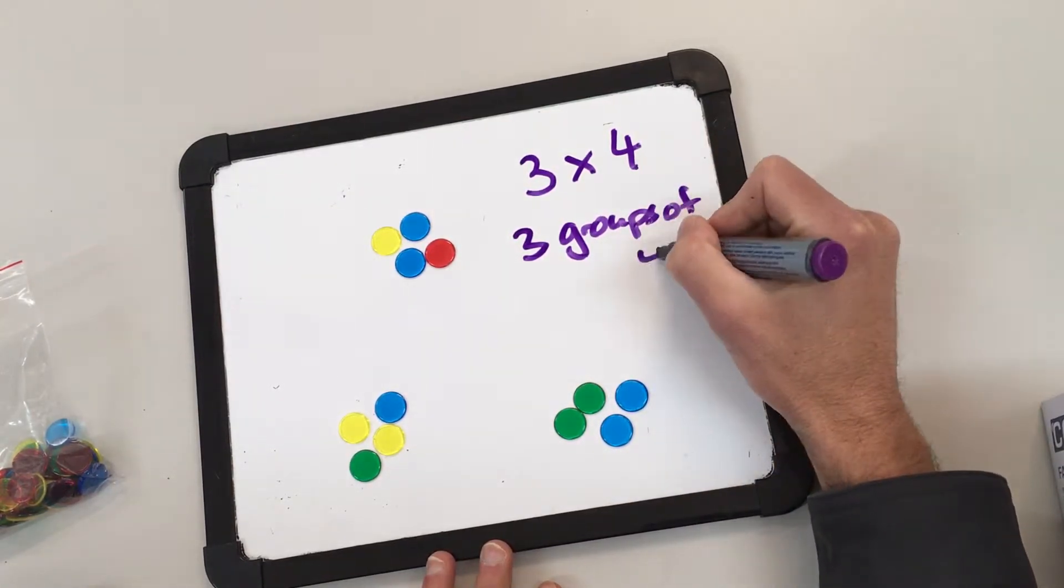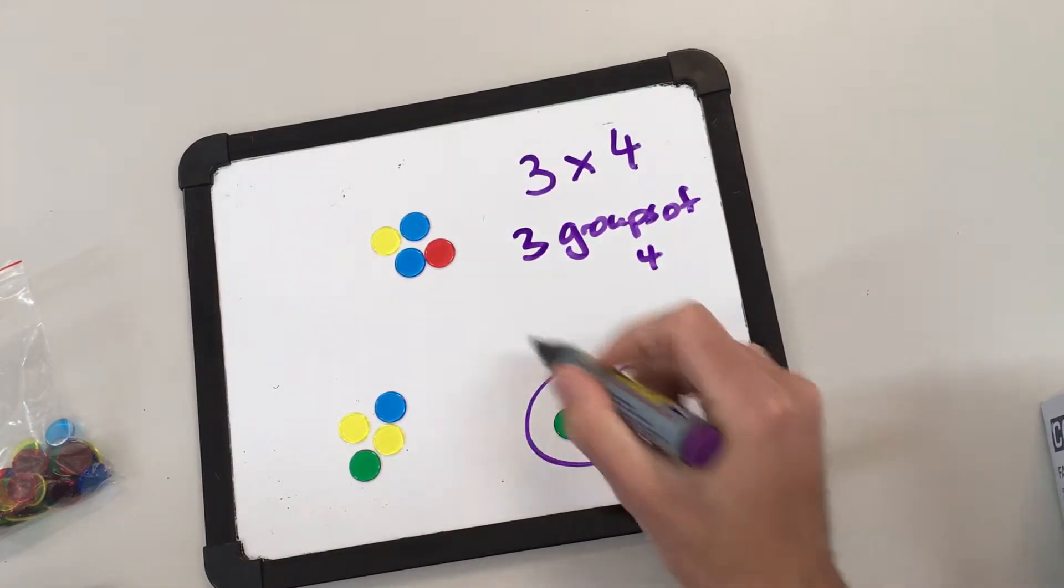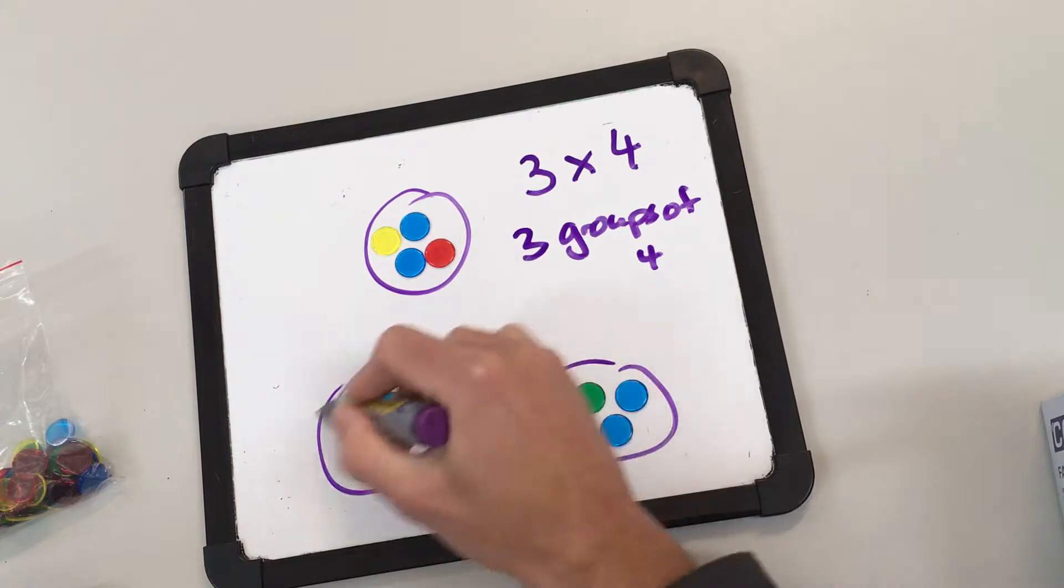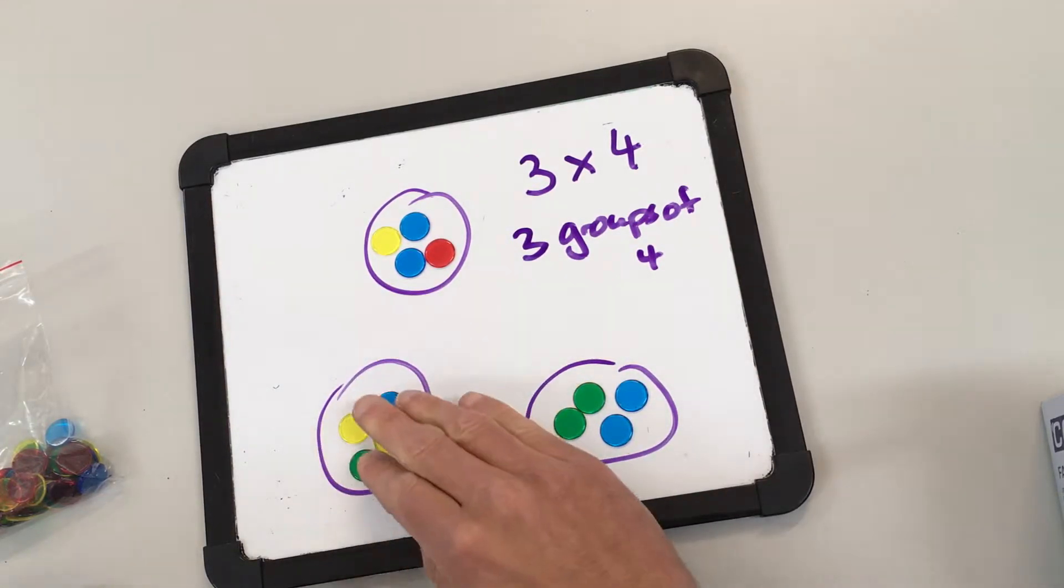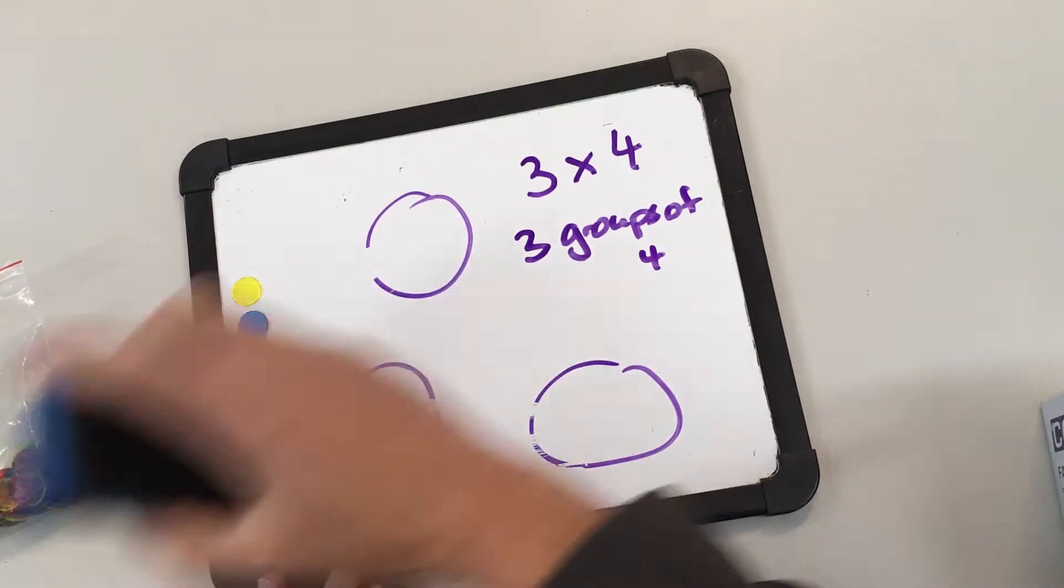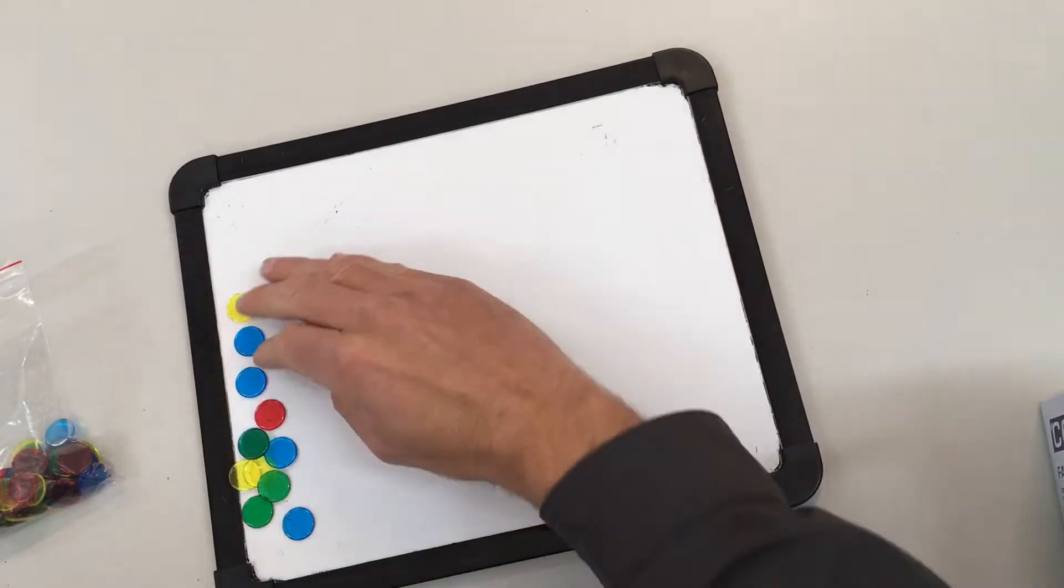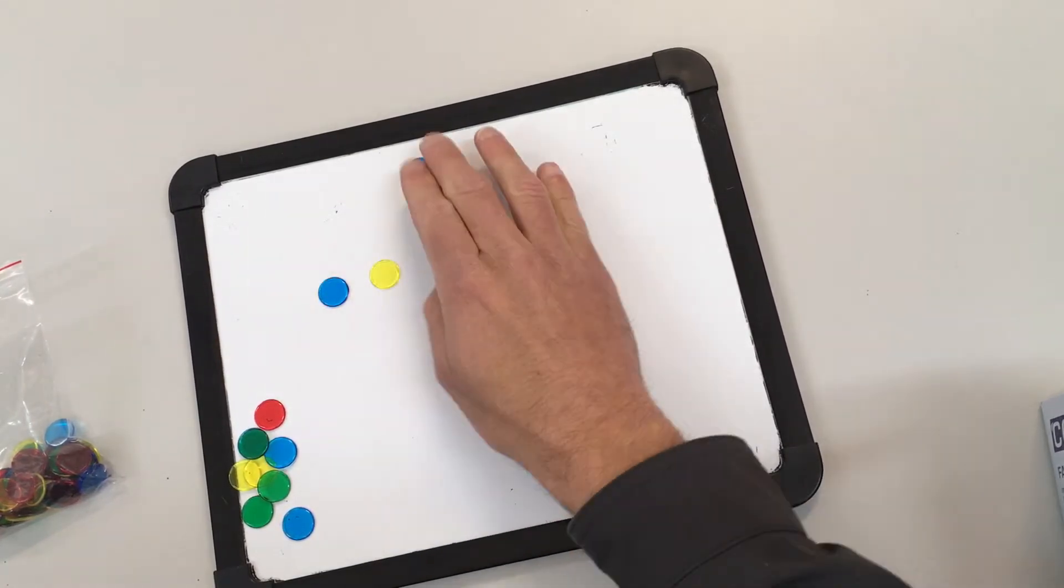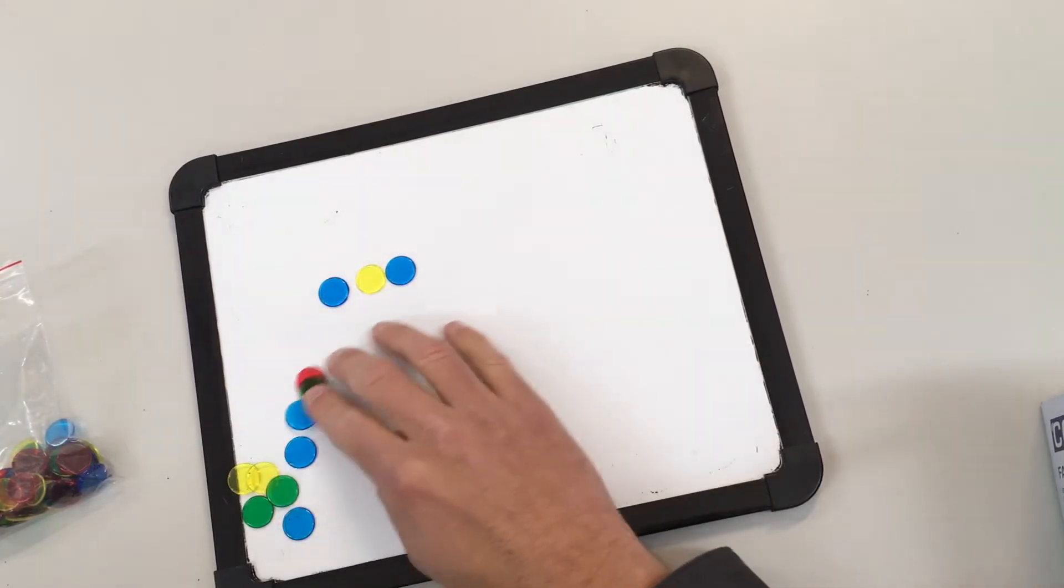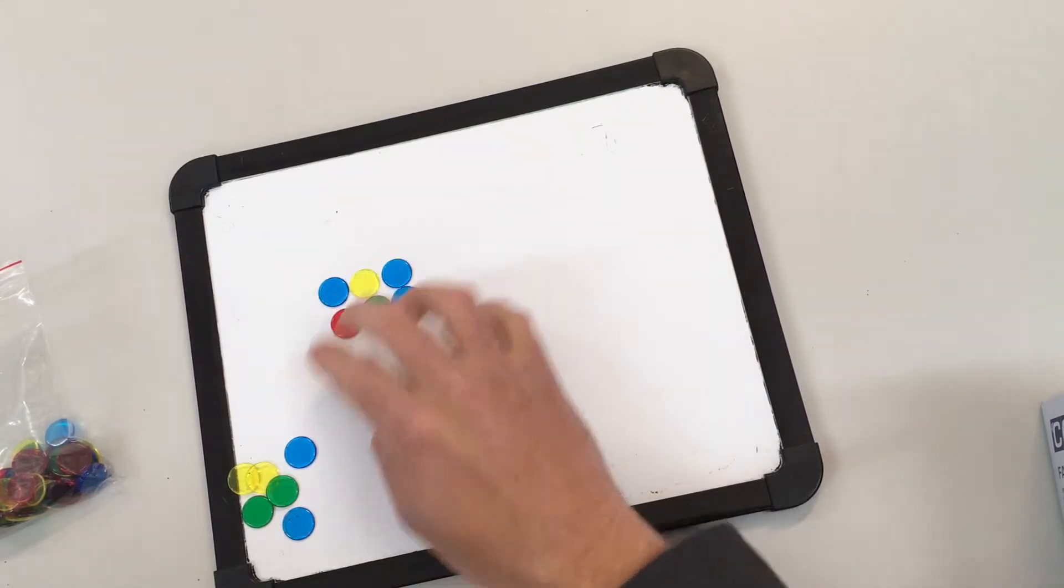However, we can start to use these facts in a different way called arrays. Now an array is, instead of organizing our counters into groups, we organize them into rows.